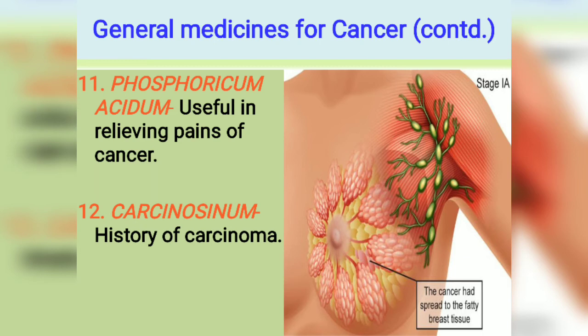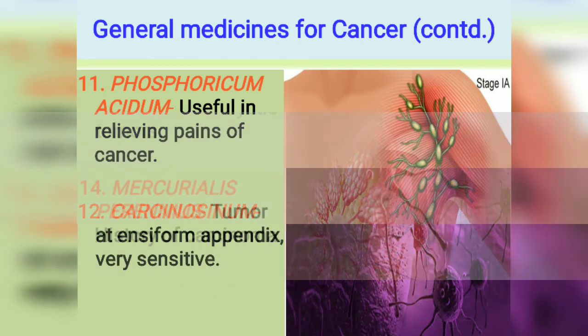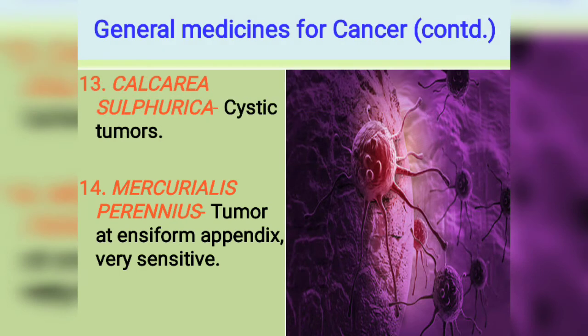Next is Calcarea Sulphurica for cystic tumors — wherever cystic tumors are present, this is the medicine. Next is Mercurialis Perennis for tumors of the appendix, very sensitive — any type of tumor of the appendix, Mercurialis Perennis is the medicine.